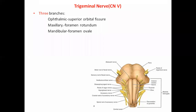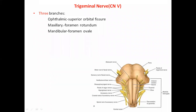The trigeminal nerve is a mixed nerve — it has both sensory and motor components. You can understand this from its two roots: the larger root is sensory and the smaller root is motor.